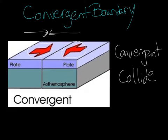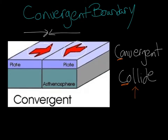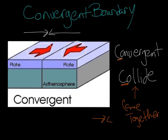I took this from a song by Mr. Comerford, who has an awesome song about plate boundaries on YouTube. So the strategy is 'convergent collide' — they both start with CO. To collide means they come together, and that's where those arrows both come towards each other. That's the convergent boundary.